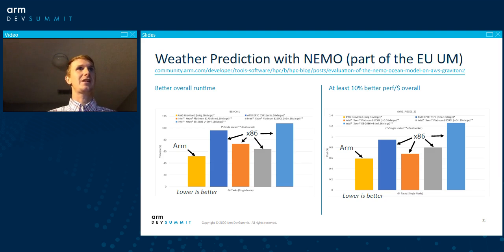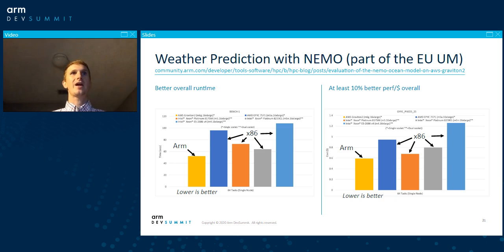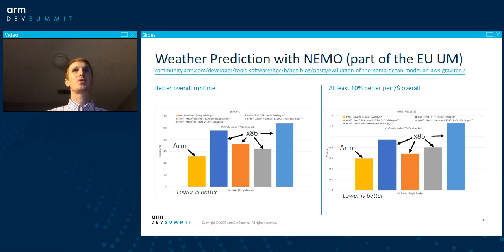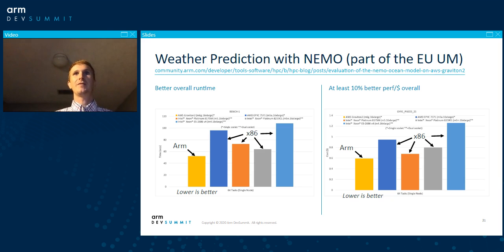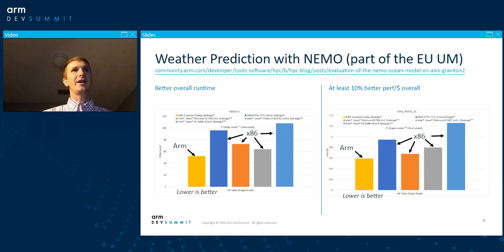Another example from government and public sector computing: the weather prediction model, specifically the European Unified Model — the ocean part of it, NEMO. We ran it on a variety of x86 and ARM platforms and found that for this particular simulation, ARM was faster in all cases and also cheaper in all cases. The weather community has been at the forefront of using cloud computing for HPC and is very interested in rapidly scaling up hurricane simulations or any situation that needs an answer quickly. Being able to demonstrate this runs faster and cheaper on the Graviton2 is very compelling for them.